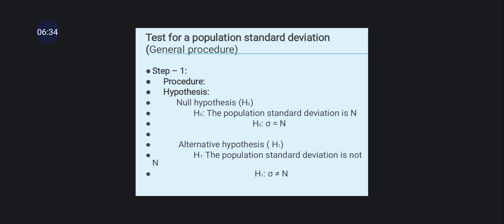The general procedure for the test of population standard deviation: Step 1 — frame the hypotheses. The null hypothesis H₀: σ = σ₀ (the population standard deviation equals the specified value). The alternative hypothesis H₁: σ ≠ σ₀ (the population standard deviation is not equal to the specified value).